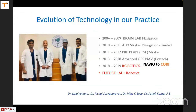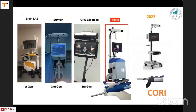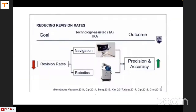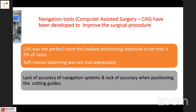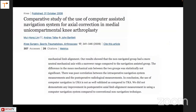In our unit we started with BrainLab and Stryker pre-planning, and are now into robotics. We currently use handheld robots. Navigation versus robots: everyone wants to reduce revision rates through precision and accuracy, but navigation has not achieved sufficient precision — especially in UKA, it is very difficult to reproduce that accuracy. Studies have proven that navigation does not perform as well as robotics for UKA.